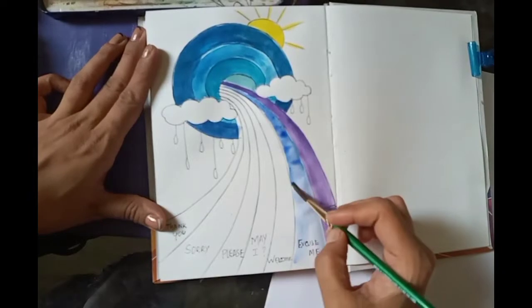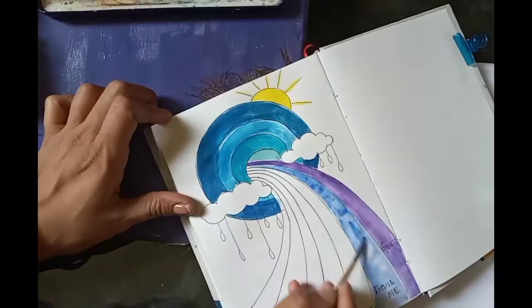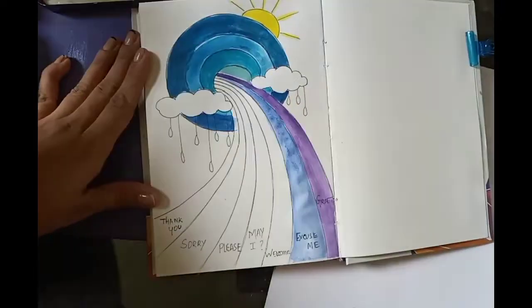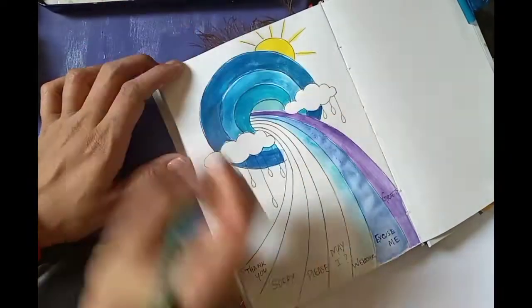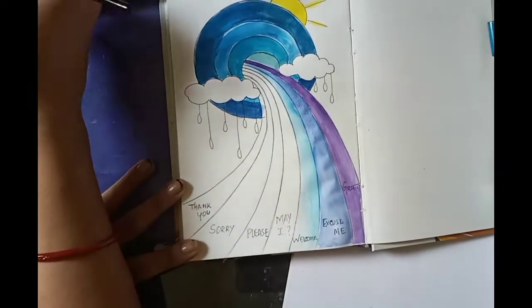Green, yellow, then orange and red. So these are the seven colors.